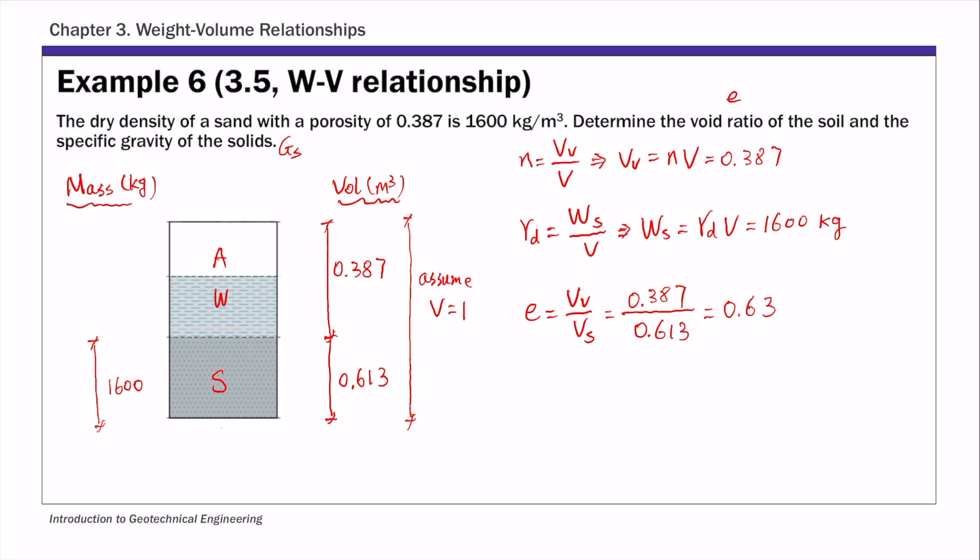And then specific gravity Gs is, in this case, the density of the solids over the density of water. Density of solids is mass of solids over volume of solids times density of water. So if you plug in the numbers: 1600, that's the mass of solids from the phase diagram, volume of solids 0.613, and density of water 1000 kg per meter cube. If you plug in these numbers, the specific gravity is 2.61.